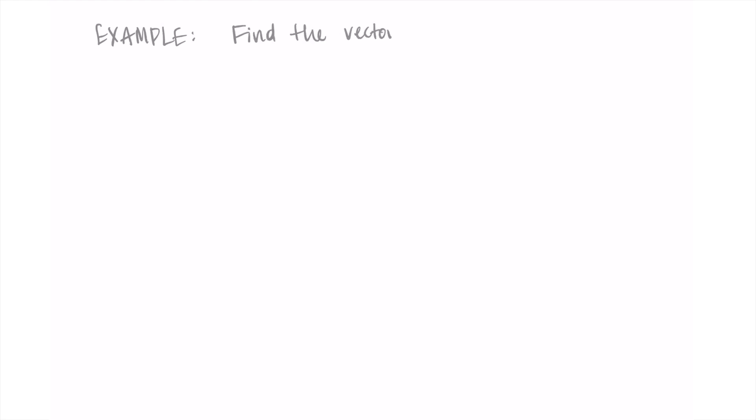Welcome. In this video I'm going through two examples that involve equations of lines in three dimensions. We're coming into this assuming you've at least seen the equation of a line in three dimensions, know where that comes from, and we're going to do some examples using that form — specifically both the vector and parametric equations for a line.